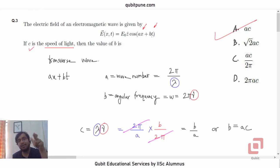And the coefficient of x is—well, we generally use k for that, just as we use ω for angular frequency. This is wave number. We call it k, but here they have called it a, which is 2π by λ, and b is the angular frequency or ω. So that is question number three.